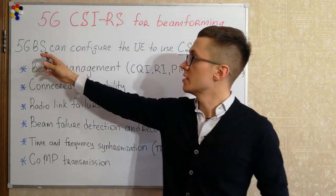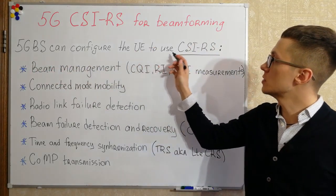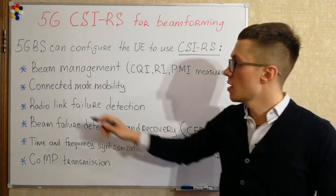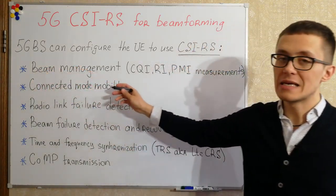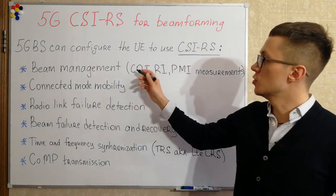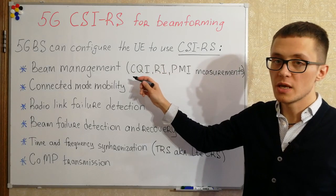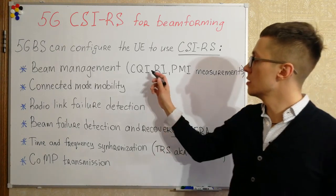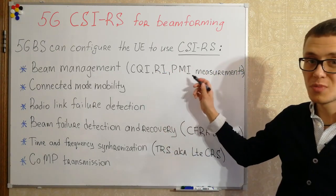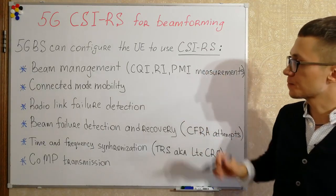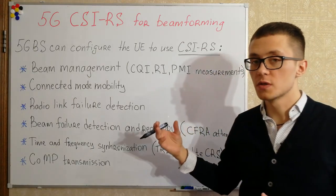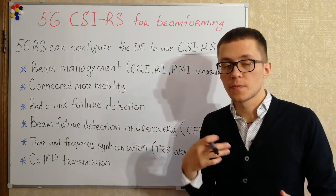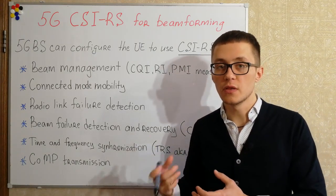The 5G base station can configure user equipment to use channel state information reference signals for the following reasons. First of all, for beam management and measurements — in order for user equipment to estimate and calculate channel quality indicator, rank indicator, pre-coding matrix indicator, and send these measurement reports to the base station in order to correctly estimate directional beams.